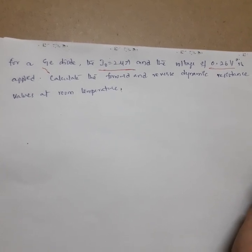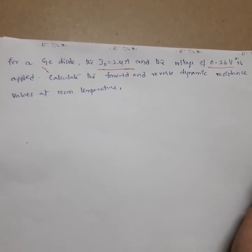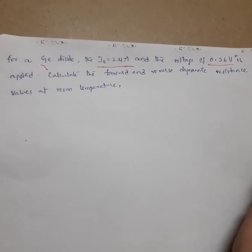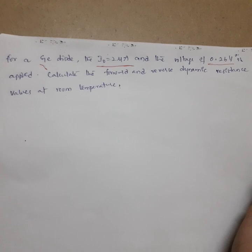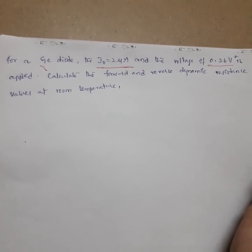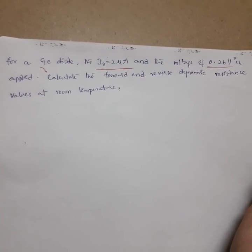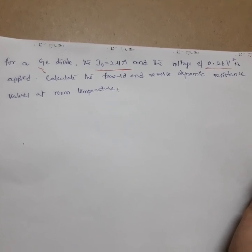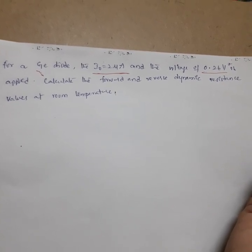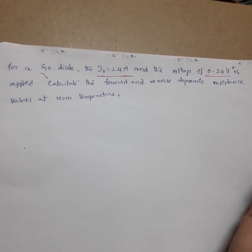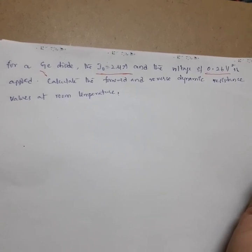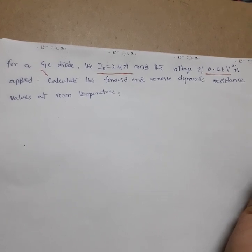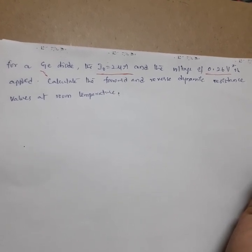Hi everyone, today we will be discussing a problem on the diode current equation. The question involves a germanium diode where the reverse saturation current I₀ is 2 micro amperes, the applied voltage is 0.26 volts, and we need to calculate the forward and reverse dynamic resistance at room temperature.